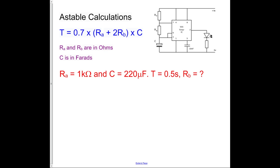So our next example has changed slightly. We're given RA as 1 kilo ohm again, we're given C as 220 microfarads, we're given T as 0.5 seconds, and we're asked to find RB. This is quite a difficult equation to manipulate, so we'll have a go at it and see if we can work it out.